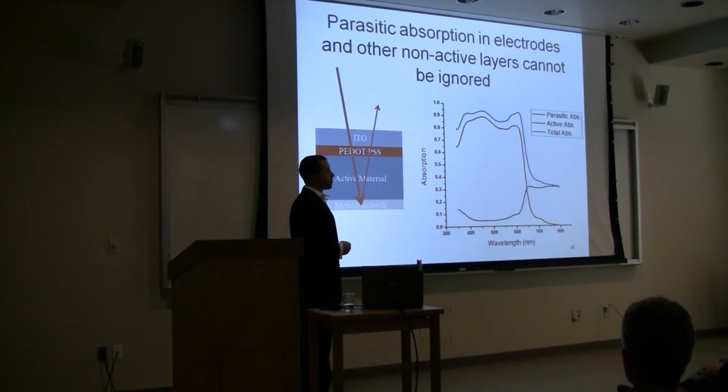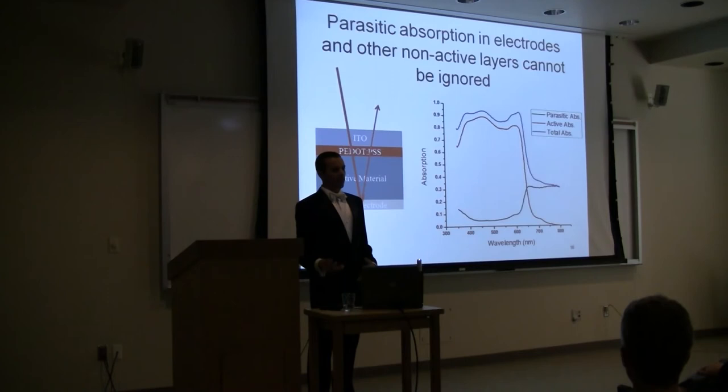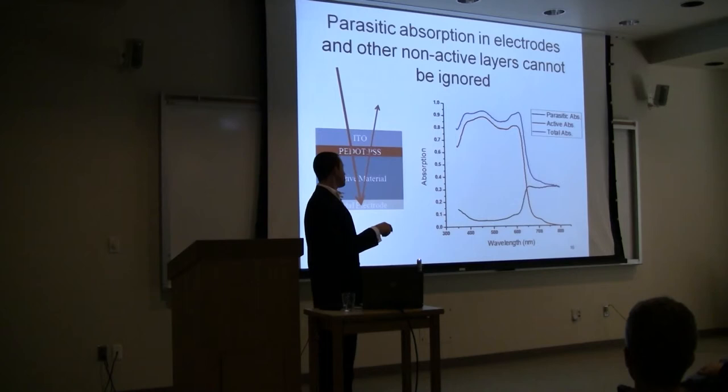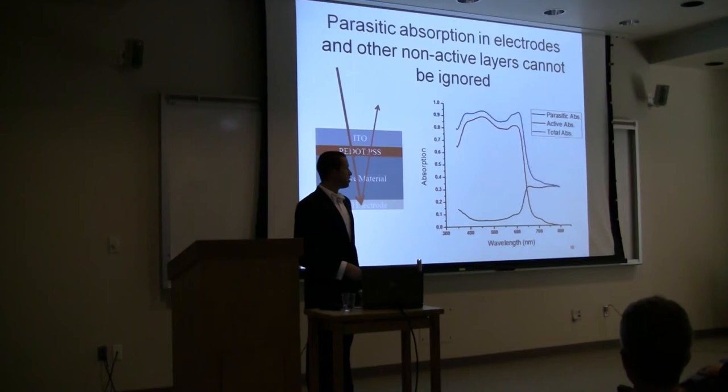The big error that happens is that people think the ITO, or all the transparent electrodes, and the reflective metal contact are both lossless. Like, they're transparent so they don't absorb. Similarly, this is a metal contact, it's a really good mirror, so it reflects most of the light, and we can just ignore the absorption of those materials. But as you can see here, this plot shows the total absorption of the device, the active layer absorption, and the parasitic absorption in these transparent electrodes. This parasitic absorption is actually pretty significant, ranging from 5% at the minimum up to as much as 35% in the areas where the active layer doesn't absorb very much. So it can't really be neglected.